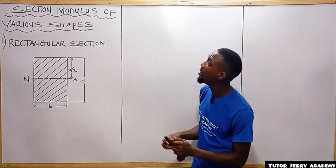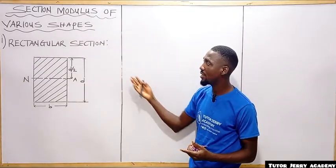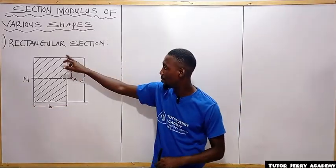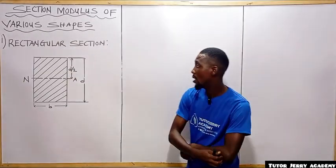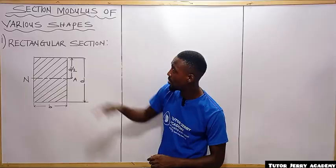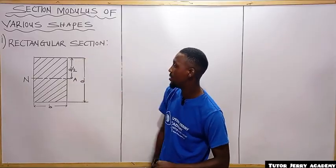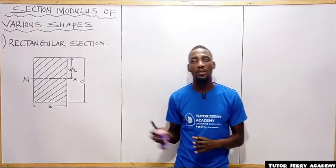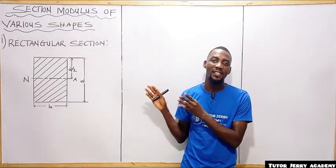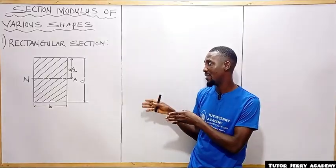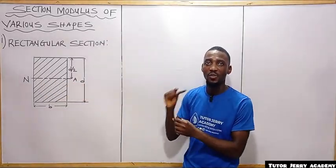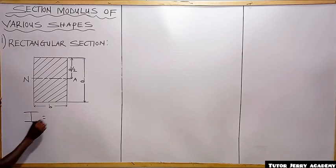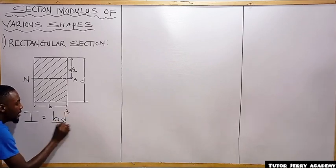We are going to be looking at the section modulus of various shapes, starting with a rectangular section. Looking at this rectangle, from this point to this point is our base, and from this point to this point is the depth. From this point to this point is our neutral axis, and from the neutral axis to the extreme fiber is d divided by 2. The moment of inertia of a rectangular section about the neutral axis is I = bd³/12.